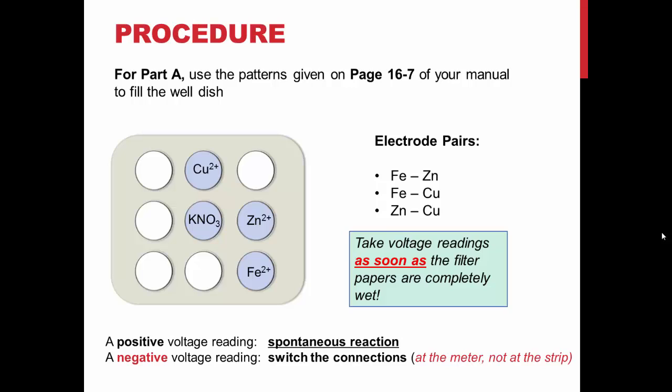Measure the voltages between the species shown with a voltmeter as soon as the filter paper is completely wet. A positive reading indicates a spontaneous reaction. If a reading is negative, switch the connections of the wires to the voltmeter.